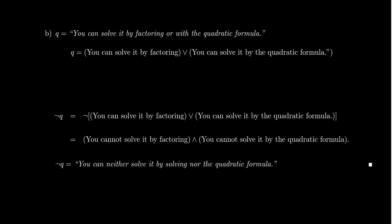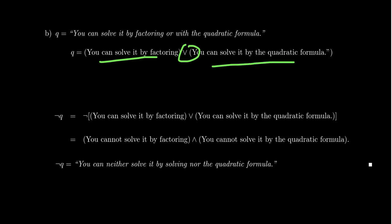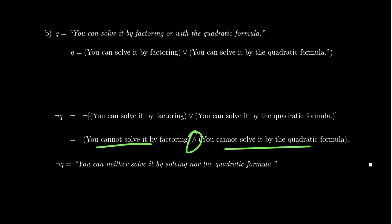Another example: take the statement Q — 'you can solve it by factoring or with the quadratic formula.' This is a disjunction. If we wanted to negate Q, we put a 'not' in front of the compound statement. Since it is a disjunction, the DeMorgan laws tell us that not-Q becomes: 'you cannot solve it by factoring and you cannot solve it by the quadratic formula.'